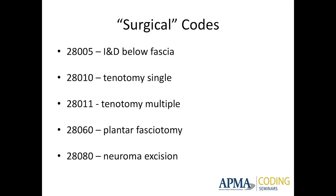Surgical codes — now I'm talking typically intraoperative codes. You have a variety of tenotomies and soft tissue codes. Incision and drainage below fascia: if you looked at 10061 for subcutaneous, now we're going below the fascia — you've got an infection that penetrates below the plantar fascia and you've got to open it up to drain. 28010 is tenotomy simple; 28011 is tenotomy multiple — meaning you're cutting more than one tendon. So if I'm doing a tenotomy to release a flexible hammer toe and I cut both the flexor digitorum longus and the brevis, that's 28011 — multiple tendons cut at that toe.